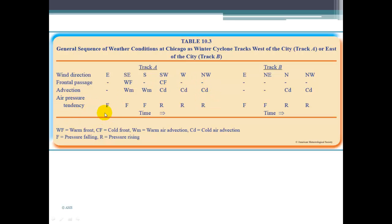And then the air pressure tendency. So falling, falling, falling, and then rising, rising, rising for track A. Remember, it's falling as the low pressure gets closer. And then once the low passes, the pressure begins to rise again. And same thing really for track B.